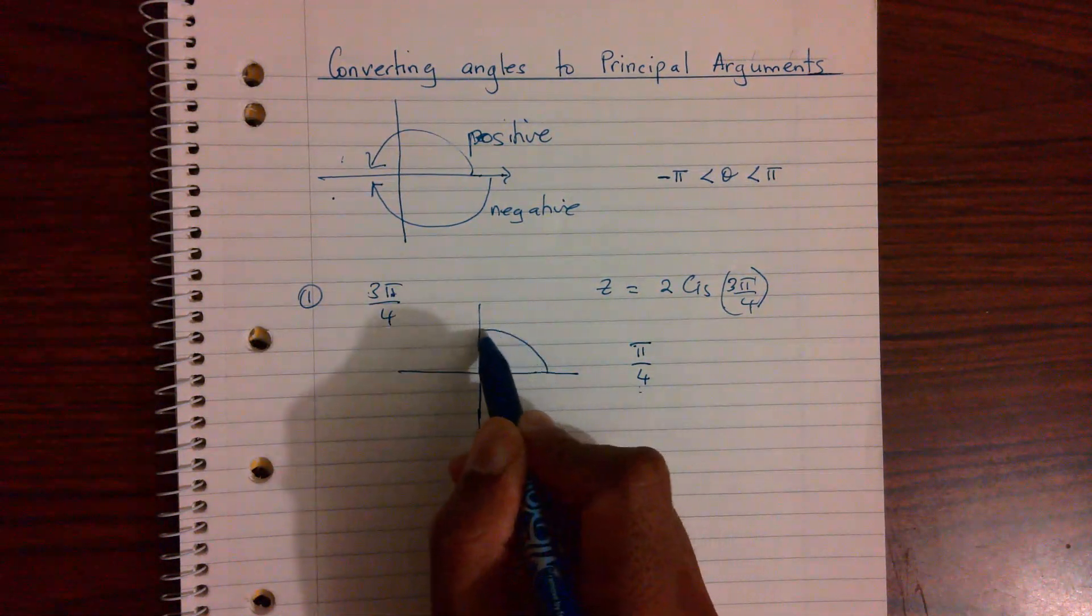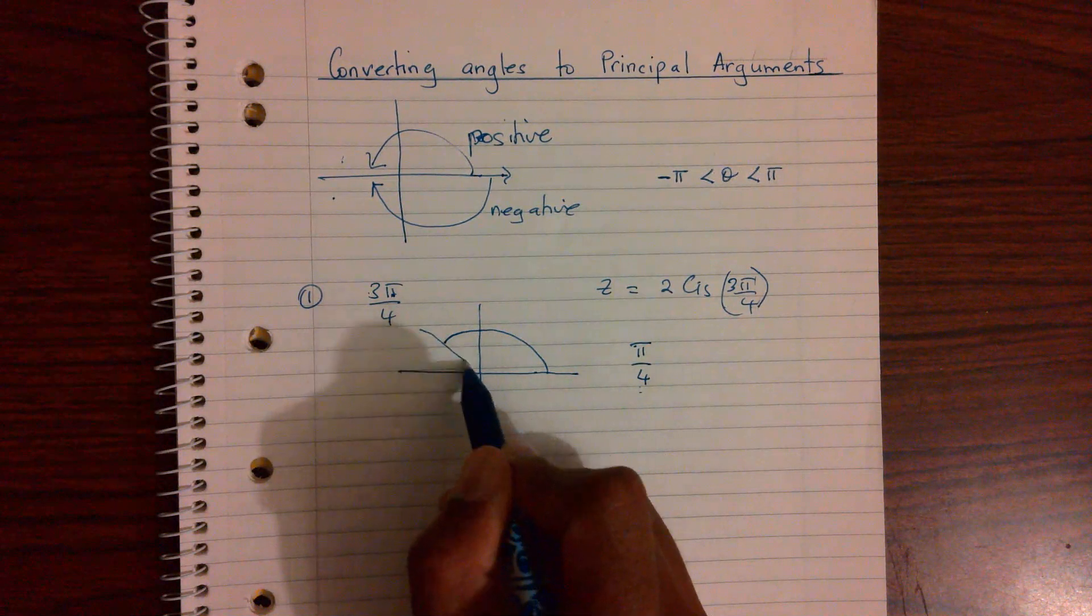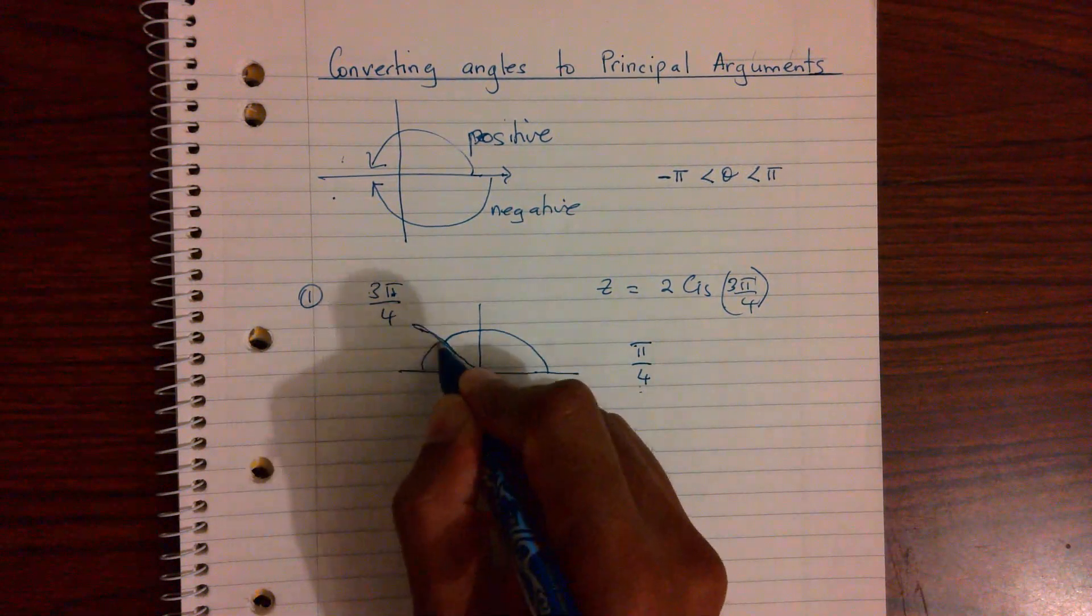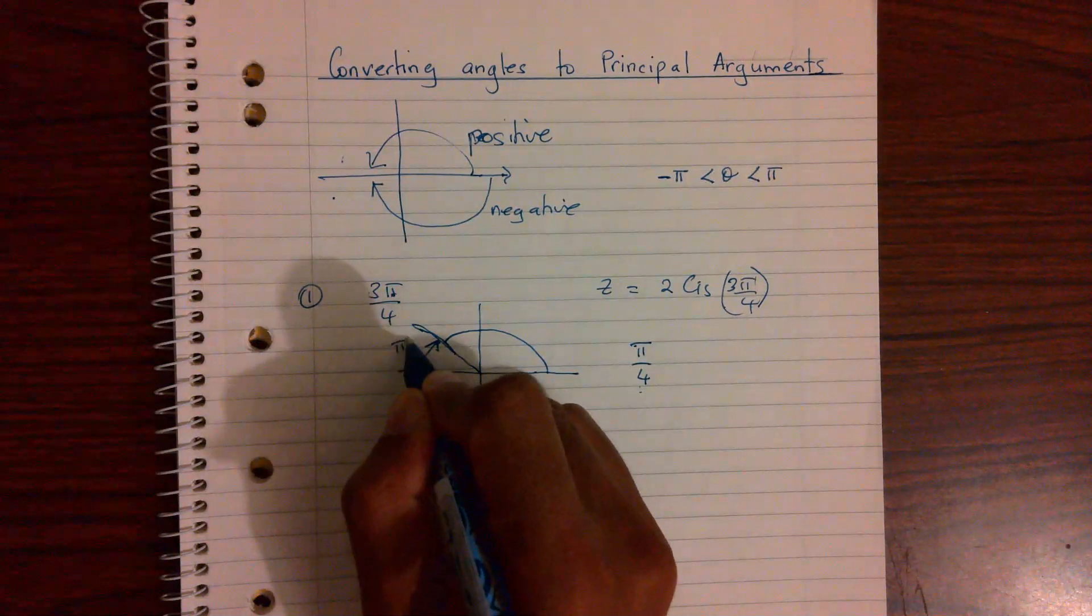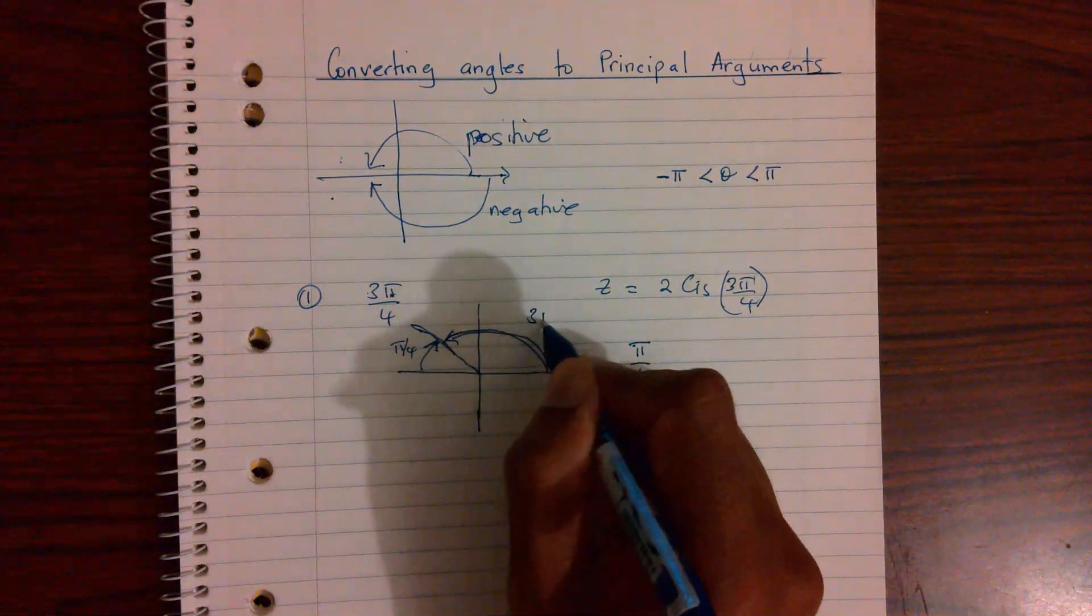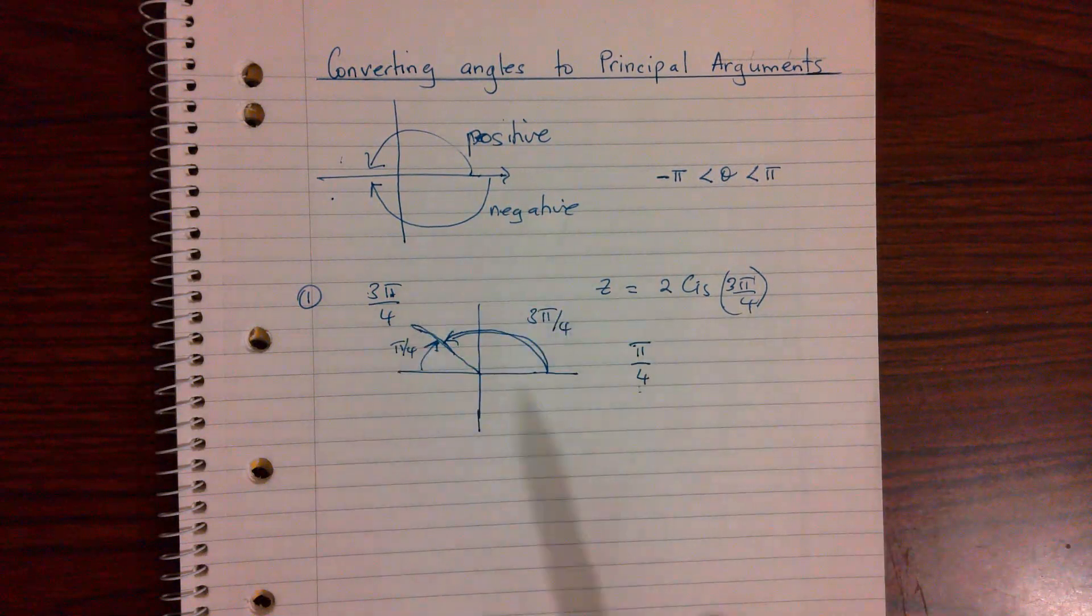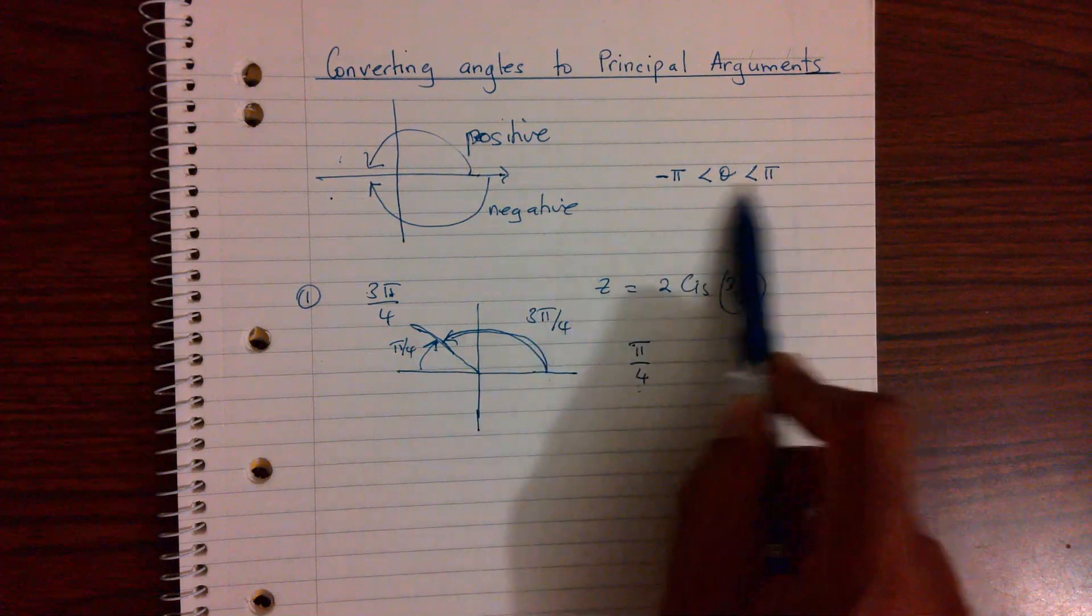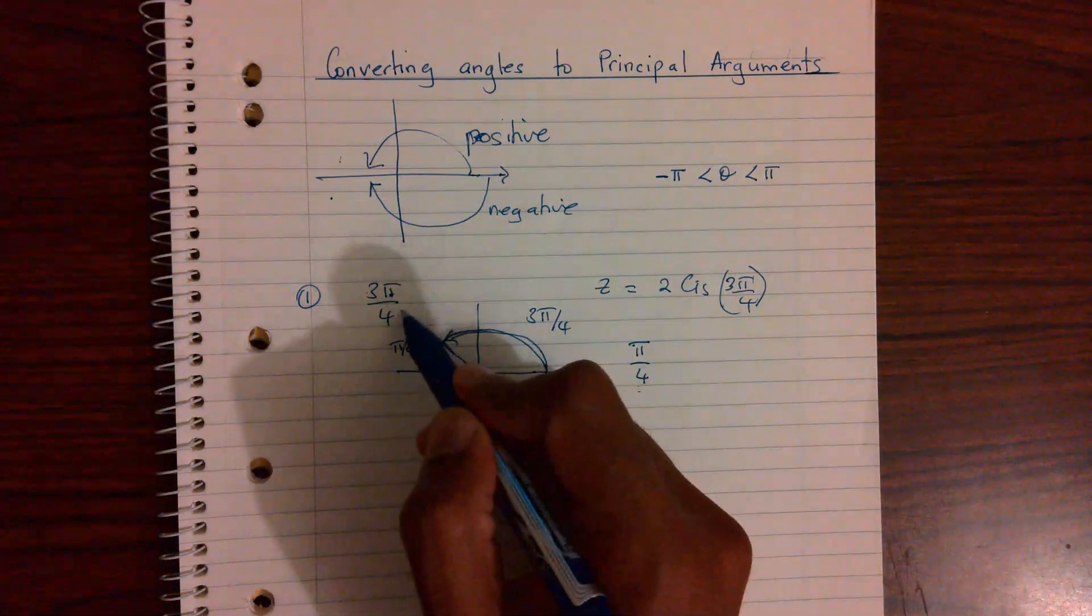So if you visualize that, that 3π over 4, well, if this whole thing is 4 pieces, 3π over 4, the 3 pieces comes to about there, and therefore you know that this is 1π over 4, and therefore that is your 3π over 4, basically means that this angle is within those conventions. So my argument is this.